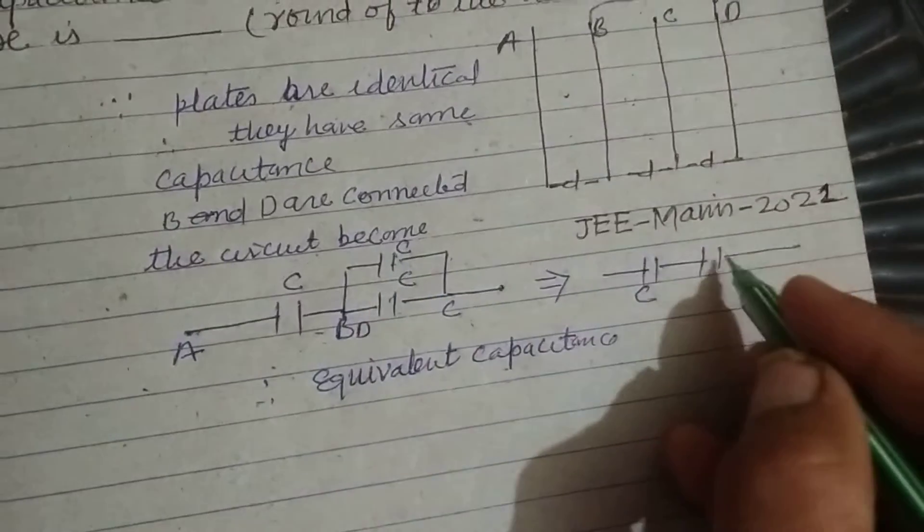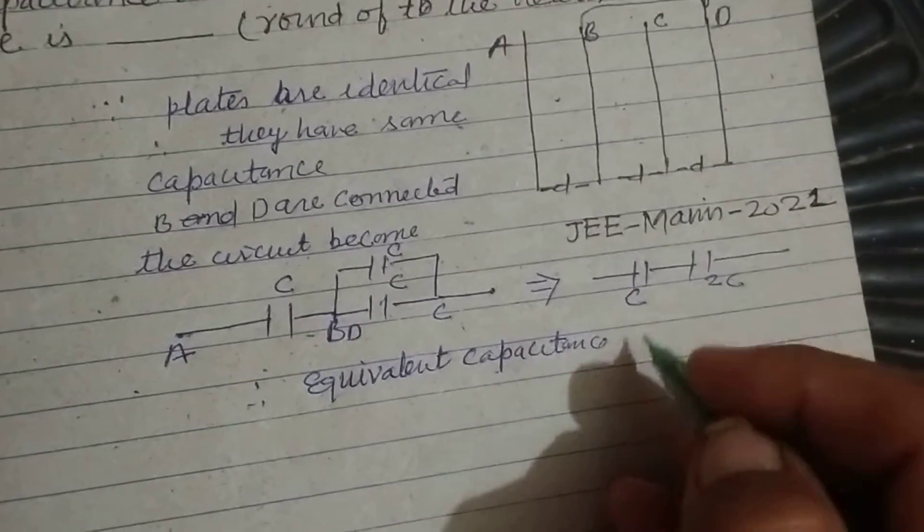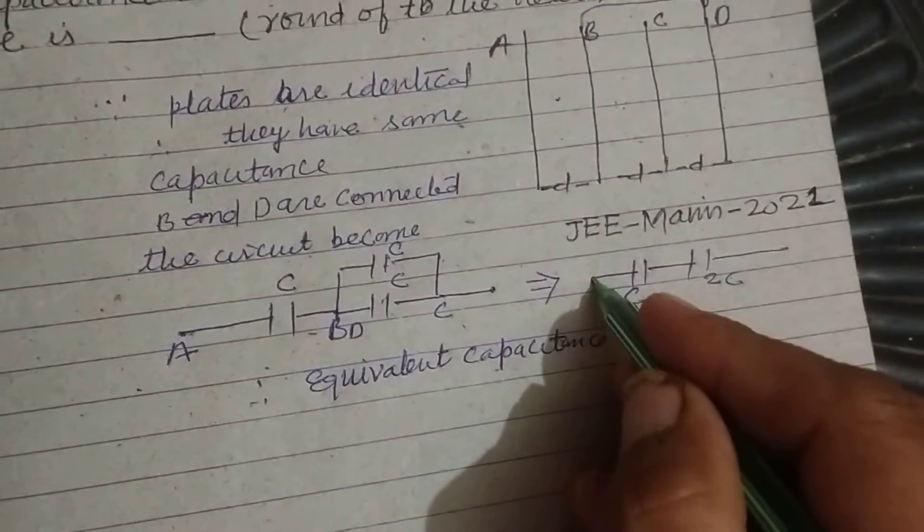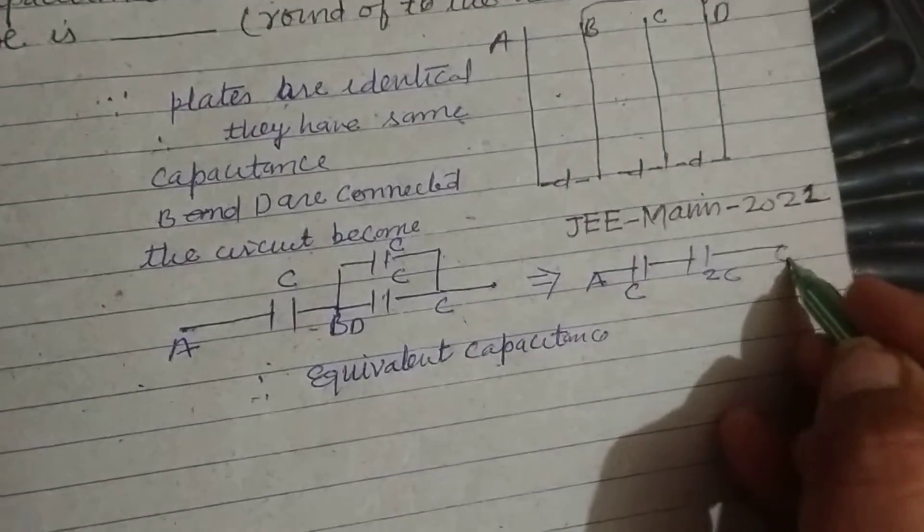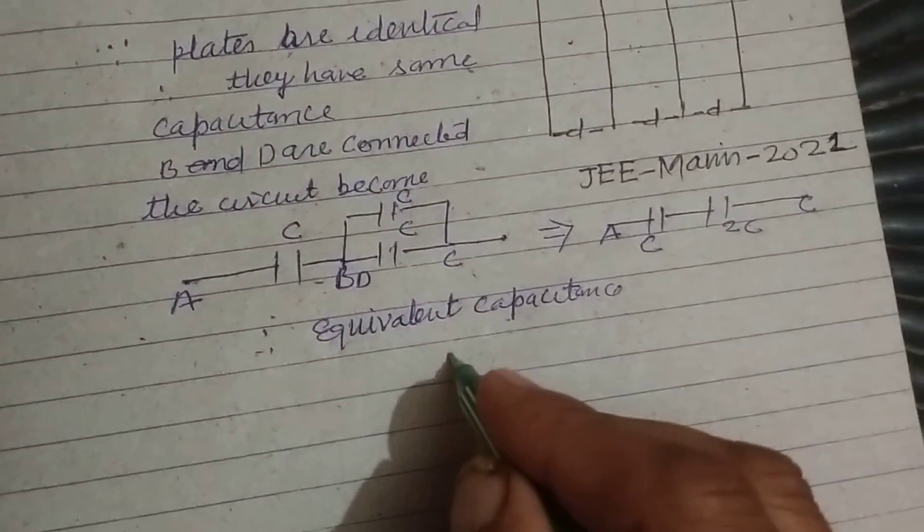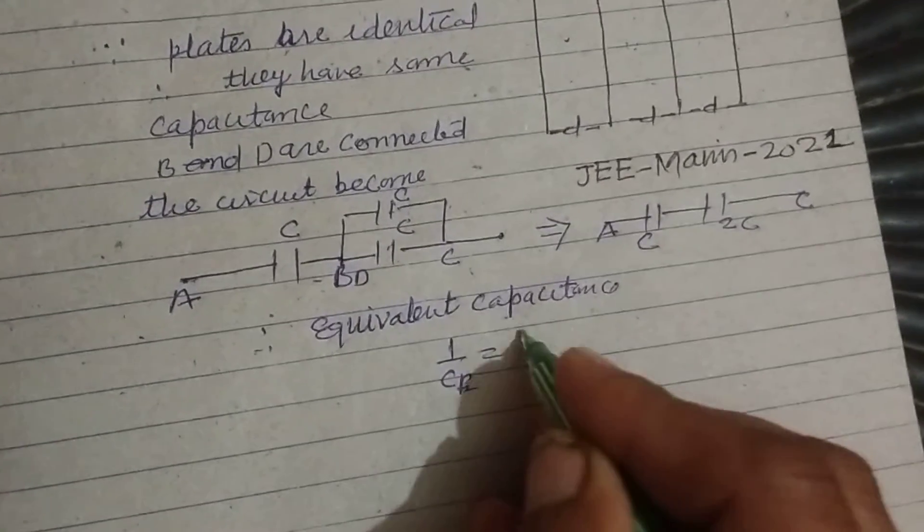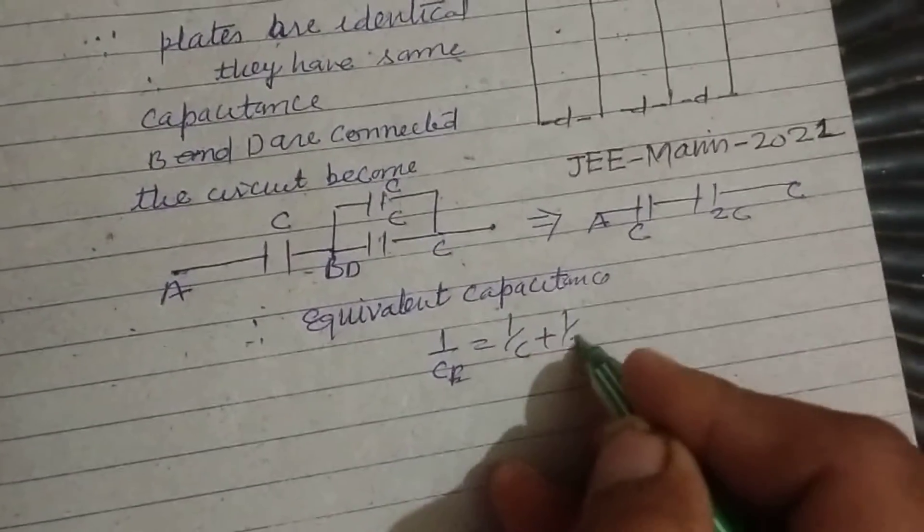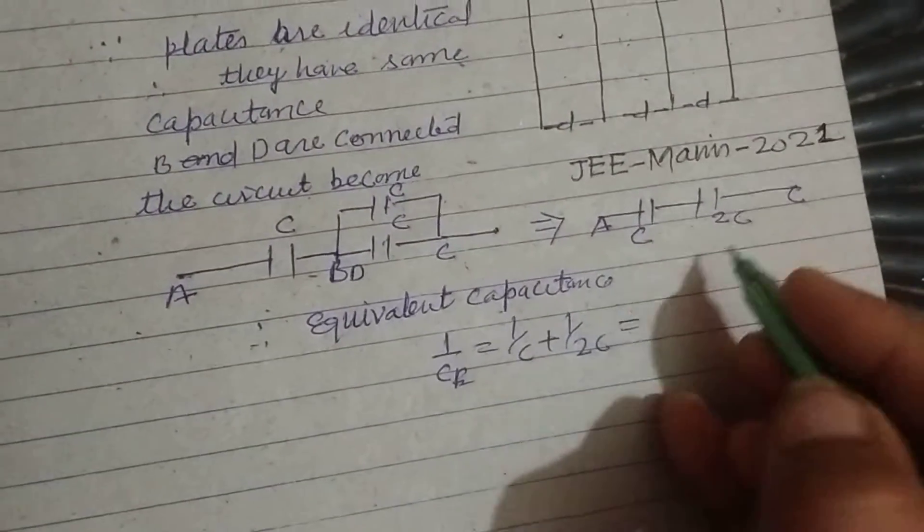This is C, this is C plus C, 2C. Therefore, between A and C, equivalent capacitance is 1 upon C equivalent equal to 1 upon C plus 1 upon 2C. Now these are in series.